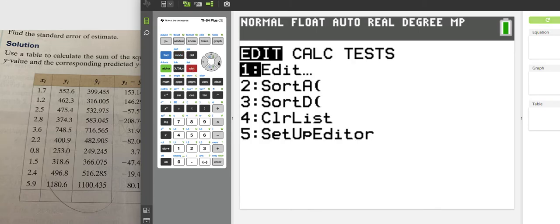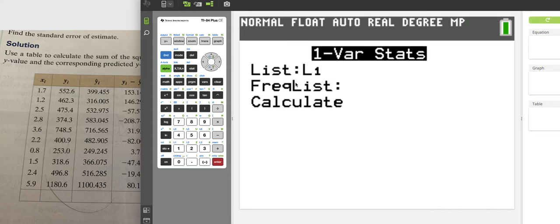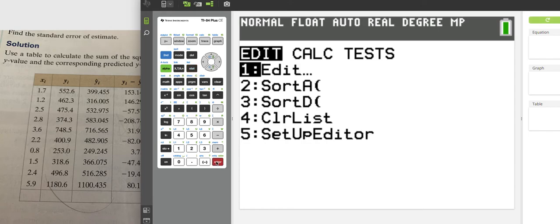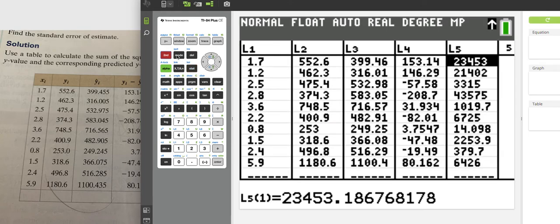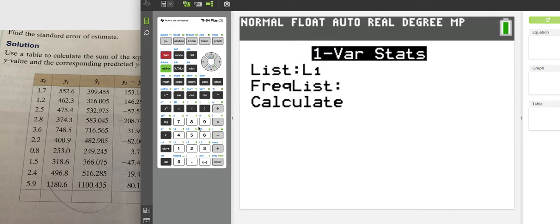You go to edit—there's a couple different ways you can do it, we'll just do the easy way. One-var stats. I want, what was it, L5. So one-var stats L5.